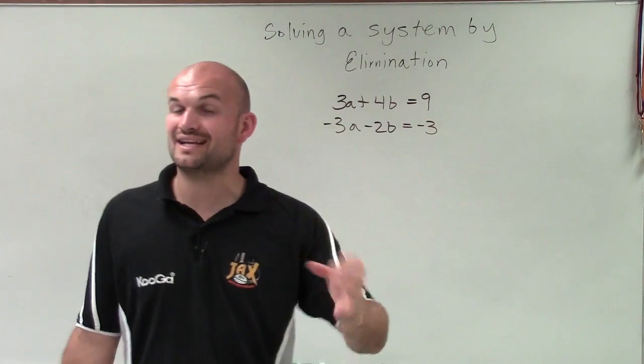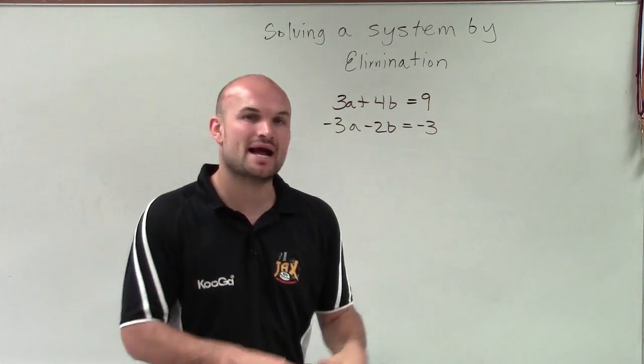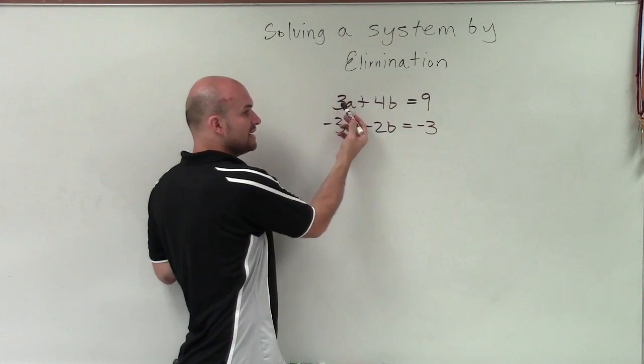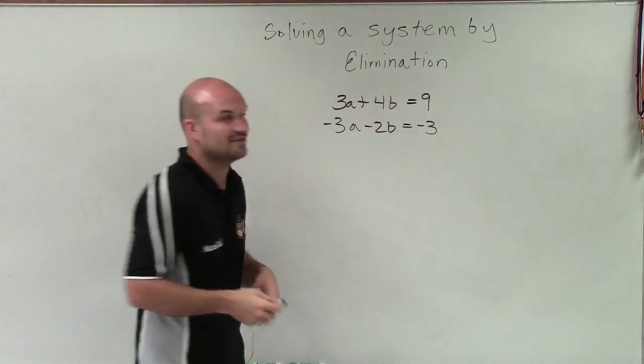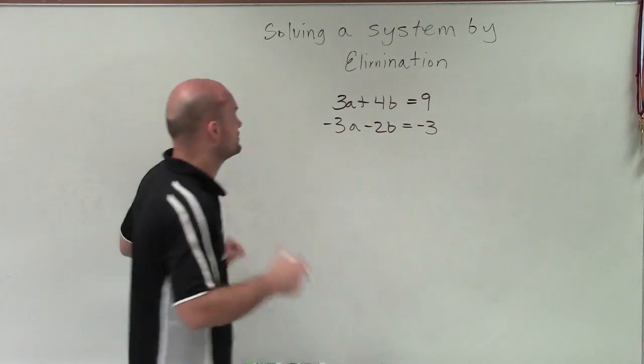Now, when they're exactly the same with exactly the same sign, meaning both positive or both negative, we like to subtract the equations. If we have the same coefficient, so here I both have a 3, but one is positive and one is negative. So when we have a system that includes this example, one being the same value but one positive, one negative...